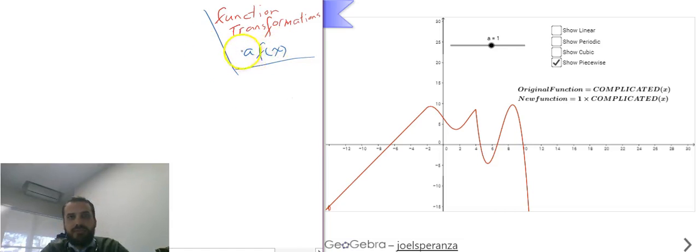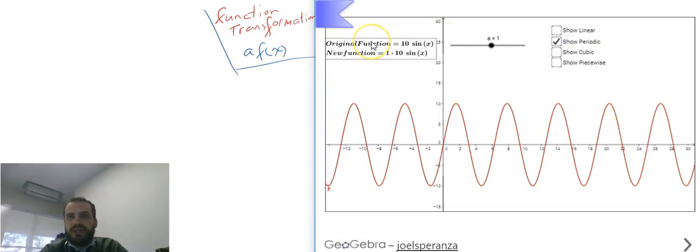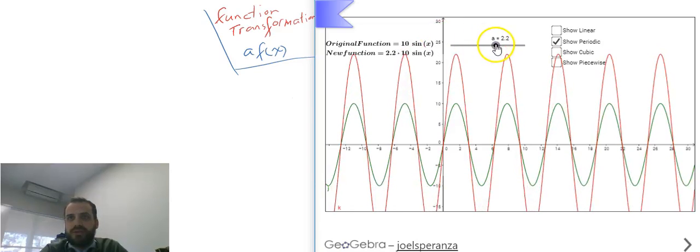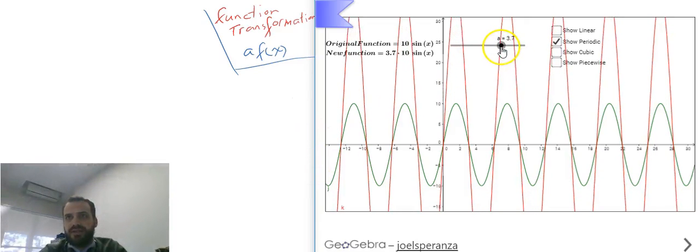Now if I take a function and multiply it by a number, let's say I take my periodic function. At the moment the original function, this function here, is 10 sin x. Now if I take 10 sin x and multiply it by a new number, put something out the front, that little dot means multiplied by. If I multiply it by the number 2, you can see it's stretching out, what we call dilating. It's dilating around the x-axis.